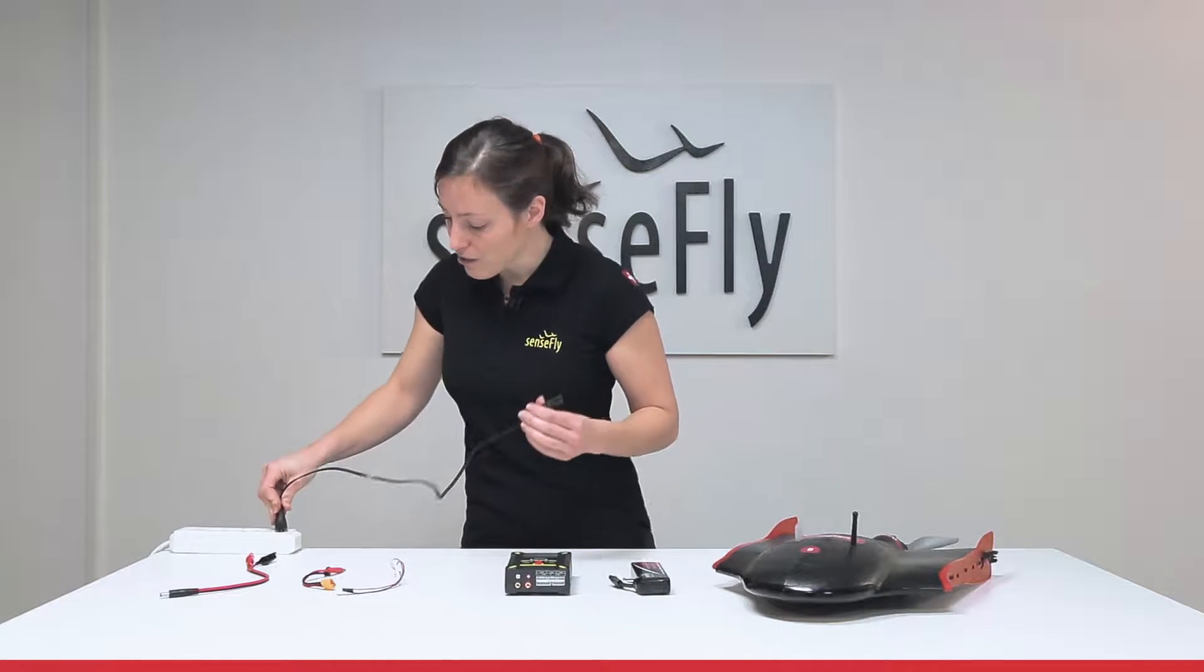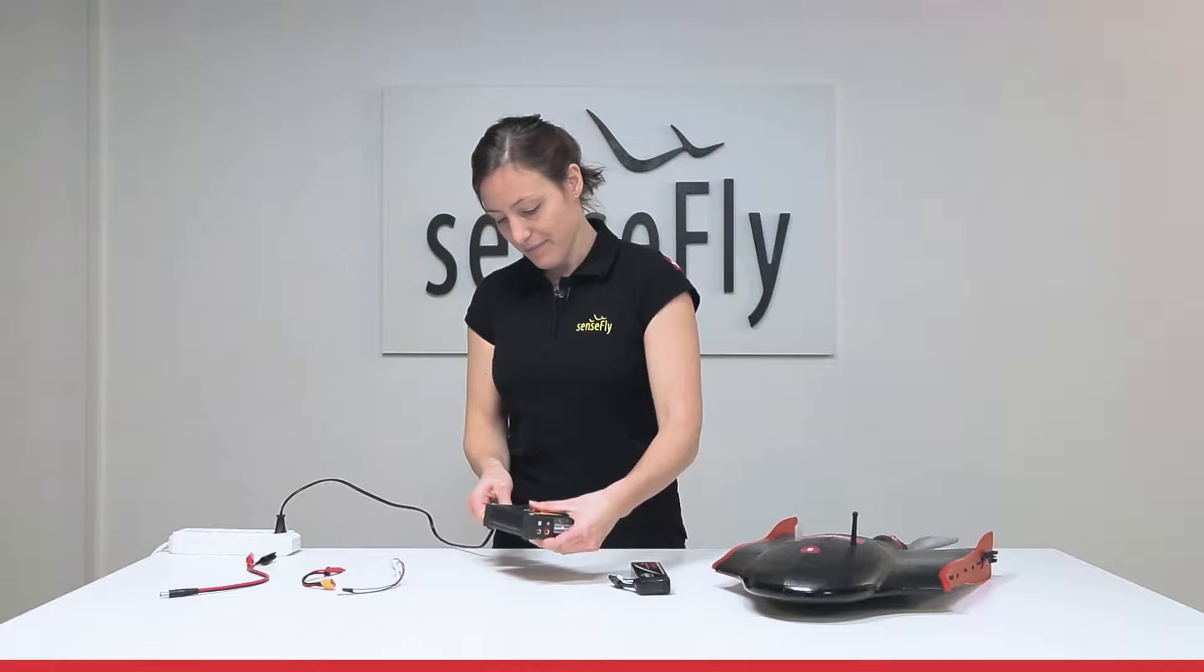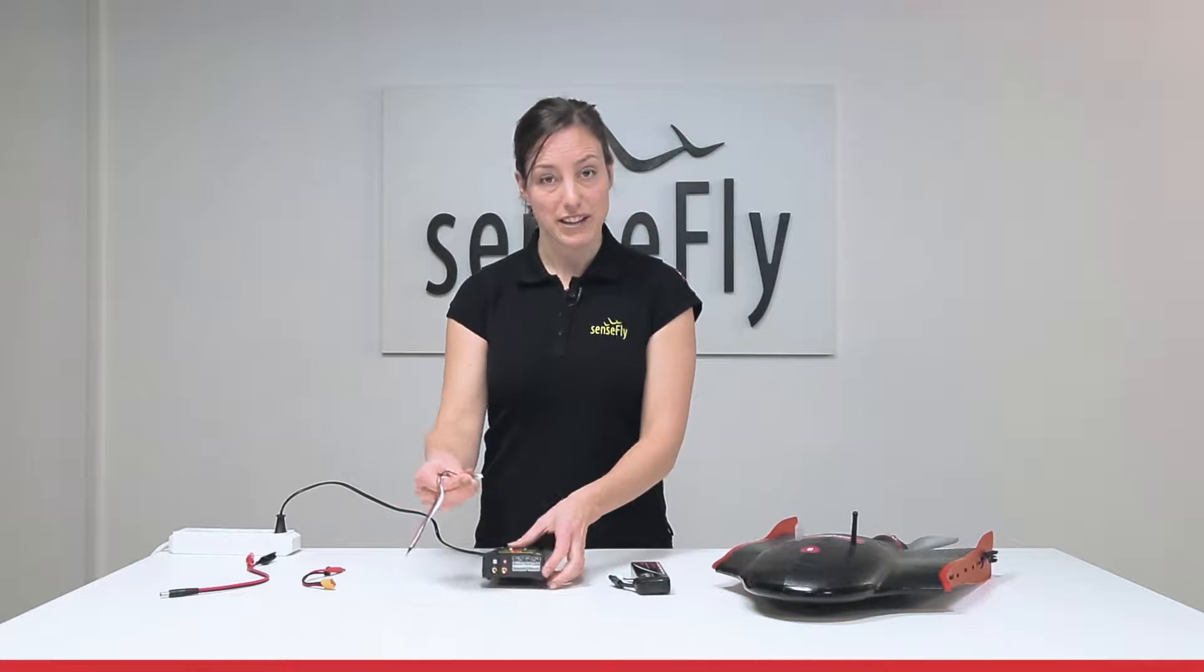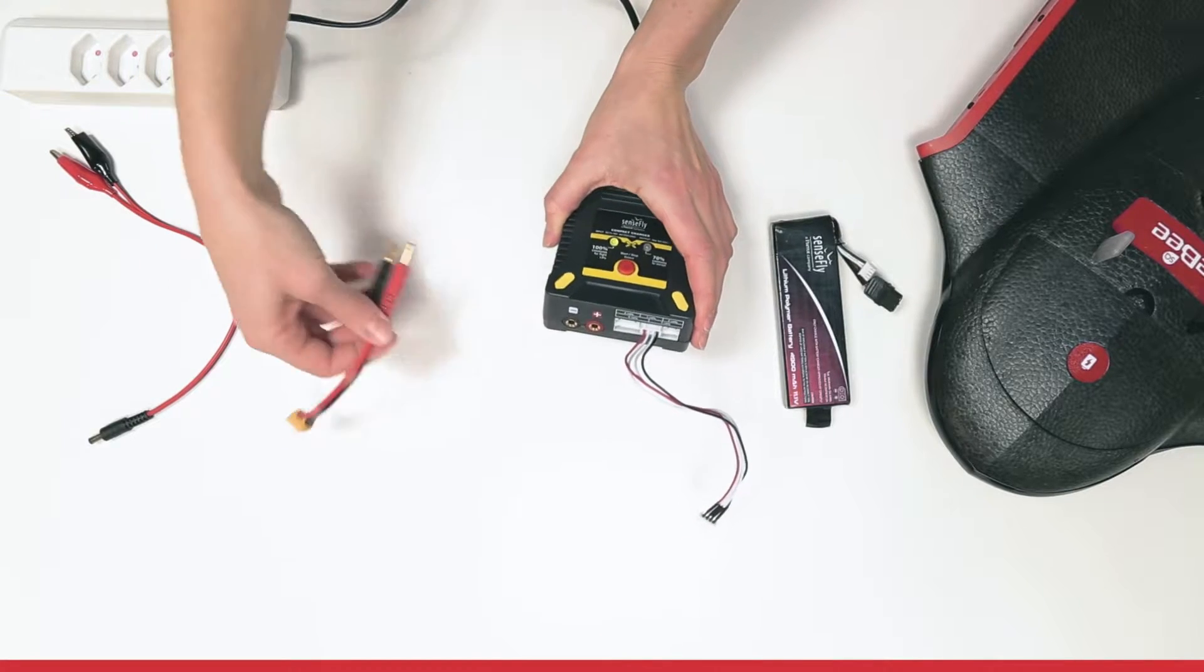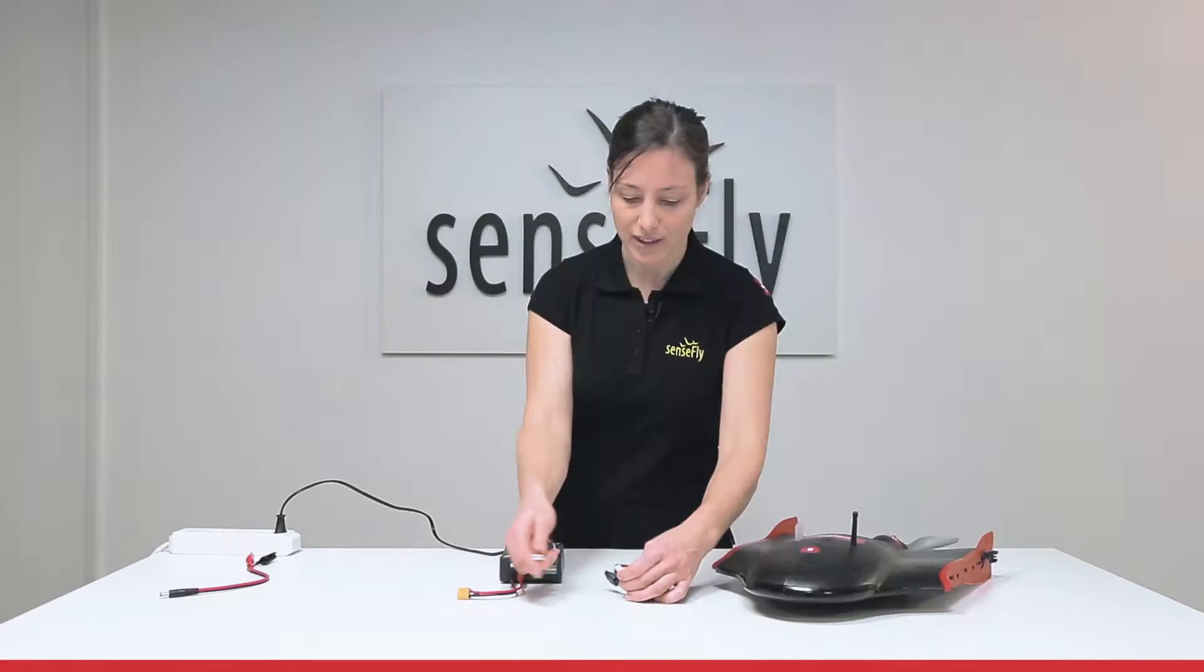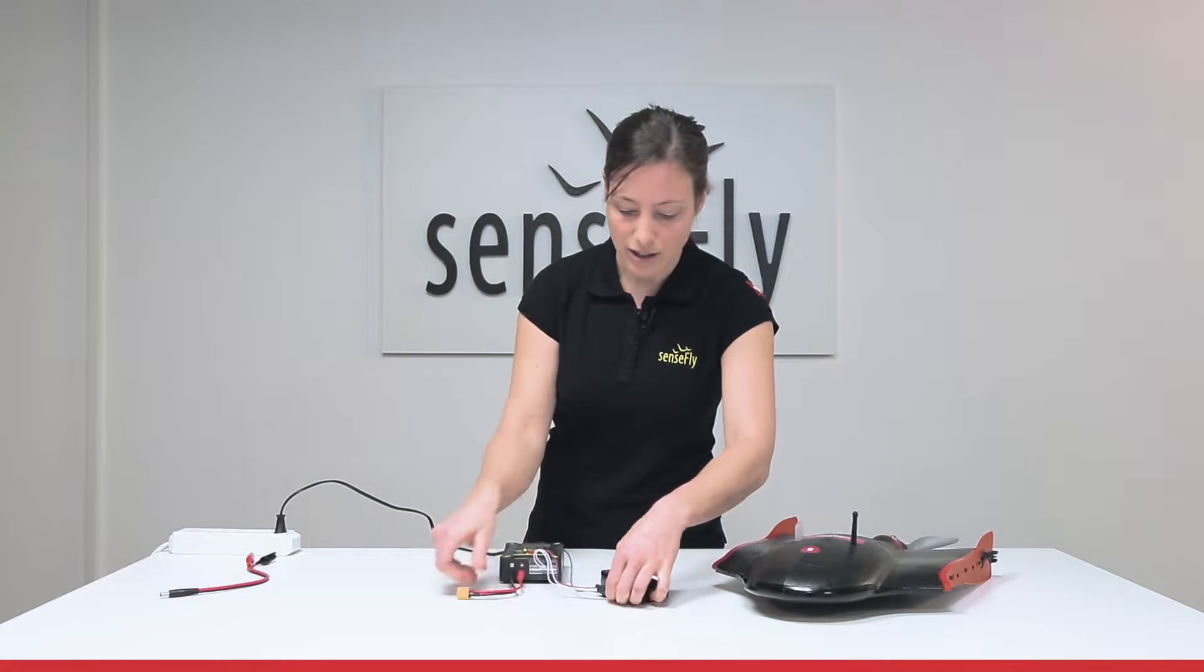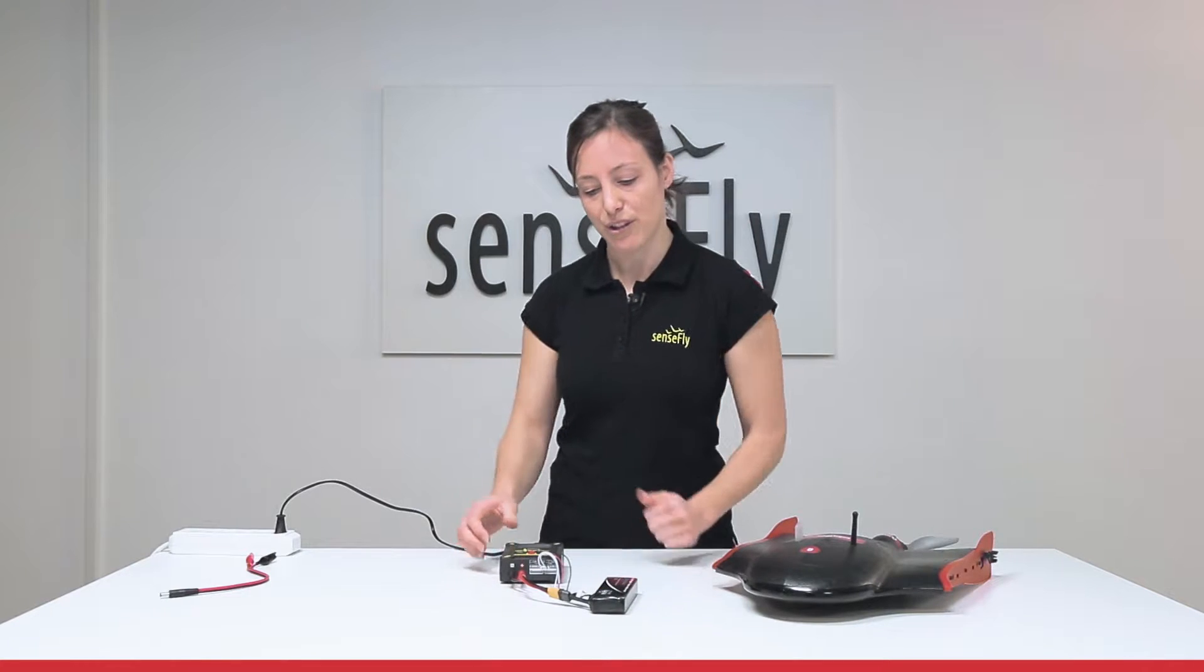We plug into the power source and connect to our charger. Now we attach the balancing cable, the charging cable, making sure that red lines up with red and black with black. We connect the balancing cable to the battery first and then to the charging cable.